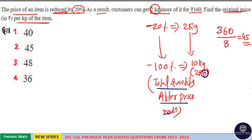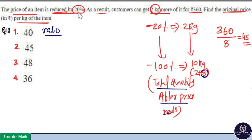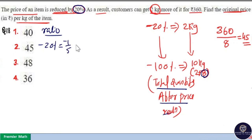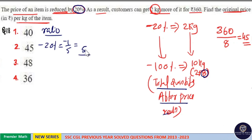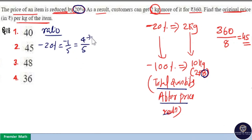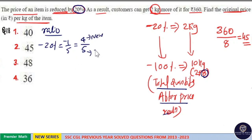We have a different method as well — the ratio method. We have a 20% reduction. 20% means 1 by 5, and reduction means minus 1 by 5. Minus 1 by 5 means: if 5 parts is the original price, then 5 minus 1, that is 4 parts, is the new price. So 4 parts is the new price and 5 parts is the original price.